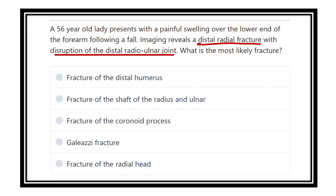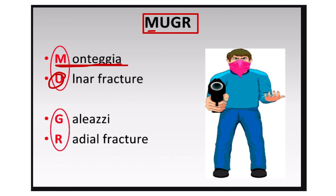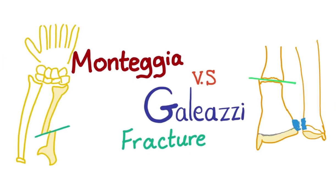The options also include Galeazzi fracture and fracture of the radial head. There is an important mnemonic: MU-GR. This mnemonic helps remember the Galeazzi and Monteggia fractures. In MU — Monteggia fracture — the fracture occurs in the ulna. In GR — Galeazzi fracture — the fracture occurs in the radius.